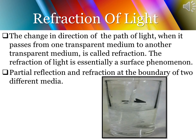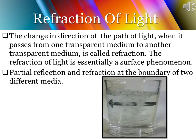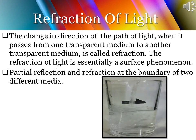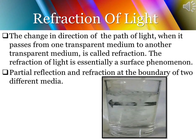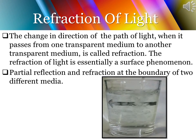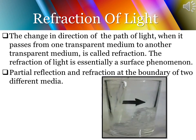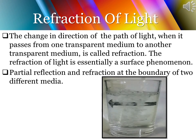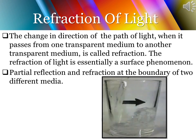Refraction of light is the change in the direction of the path of light when it passes from one transparent medium to another transparent medium. Refraction is essentially a surface phenomenon. Light has the characteristic of traveling in a straight line, but refraction introduces bending. In reflection, light bounces back in the same medium, whereas in refraction, light travels from one transparent medium to another.